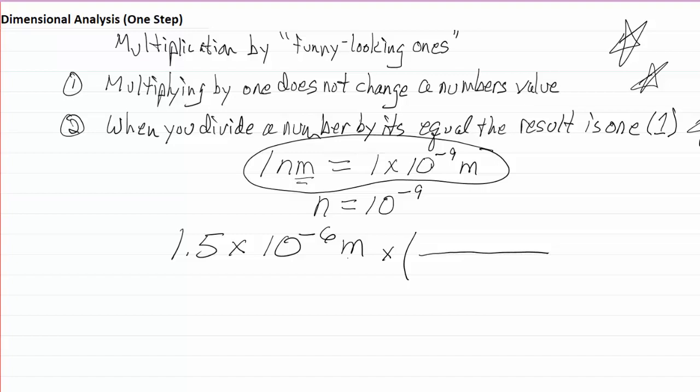my funny-looking one will have to have the meters in the bottom. So I'll put the one times ten to the minus ninth meters on the bottom, and the one nanometer on top. And now I've got things set up the way that I want them to be.